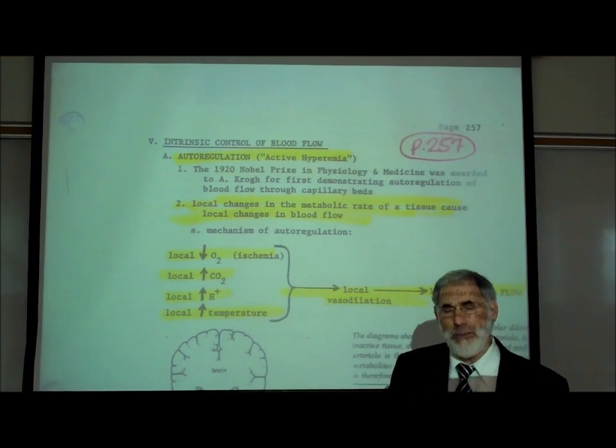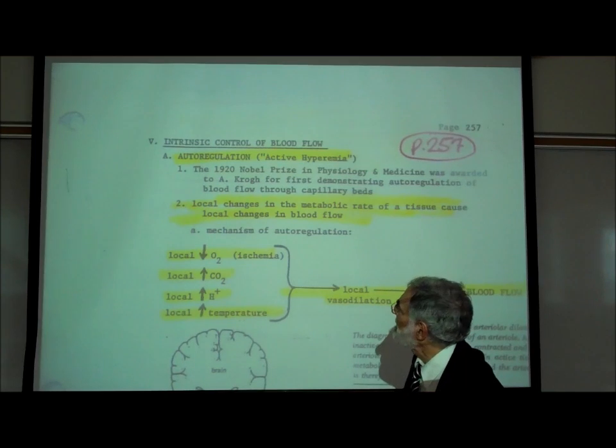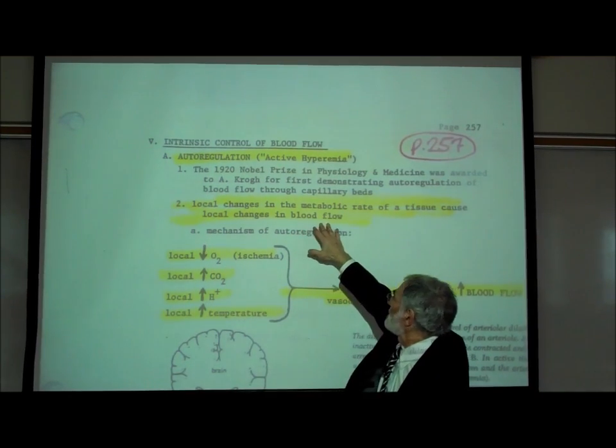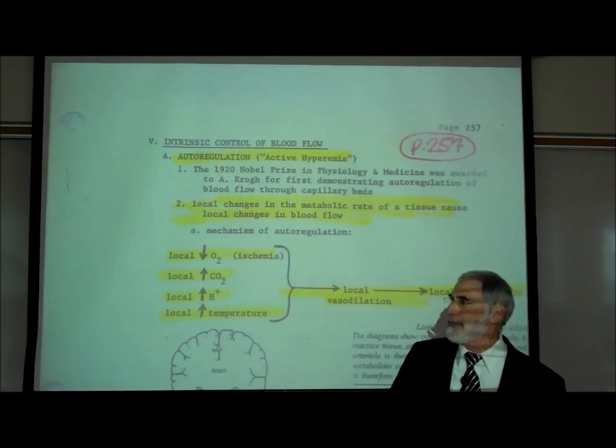So this phenomenon is commonly known as auto-regulation or active hyperemia. This is where local changes in metabolic rate of the tissue can cause local changes in blood flow.